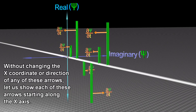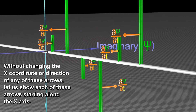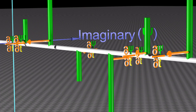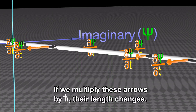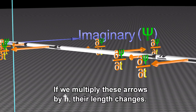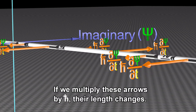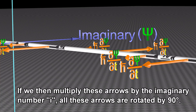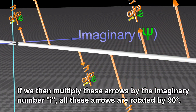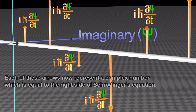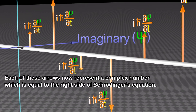Let us show each of these arrows starting along the X-axis. If we multiply these arrows by H-bar, their length changes. If we multiply these arrows by the imaginary number i, all these arrows are rotated by 90 degrees. Each of these arrows now represents a complex number which is equal to the right side of Schrödinger's equation.